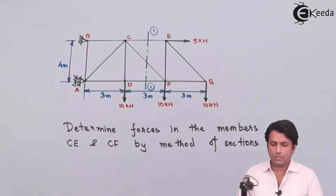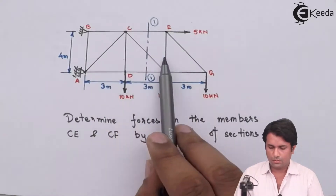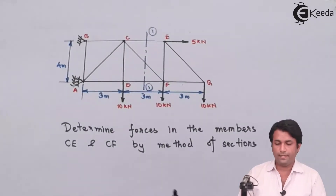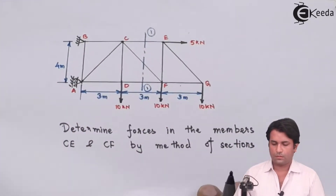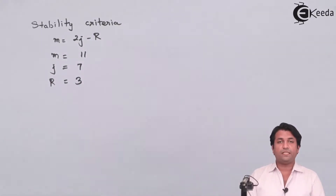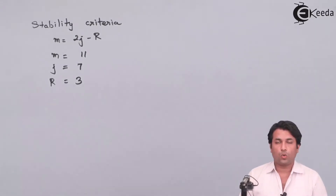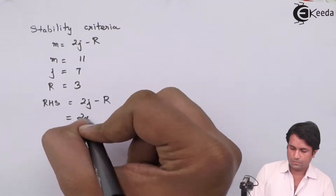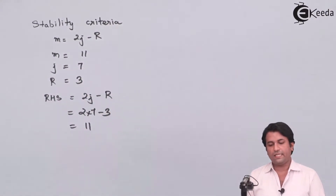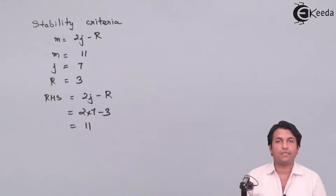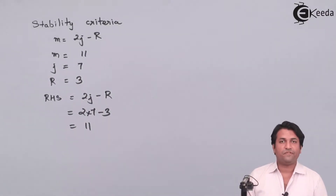Checking the number of members and reactions — the number of reactions will be three because we have a hinge support and a roller support. My right-hand side equals 12, which is the same as the number of members, which is 12. So I can see that this is a perfect truss.